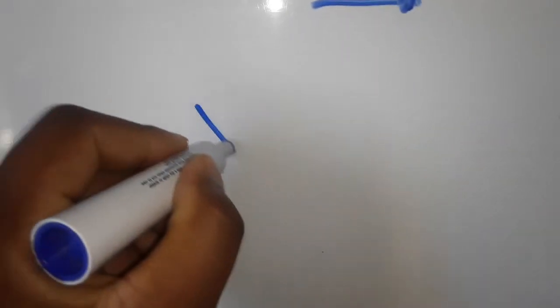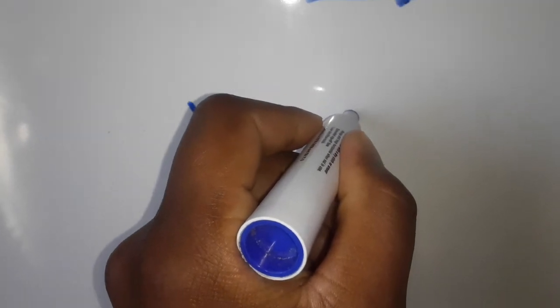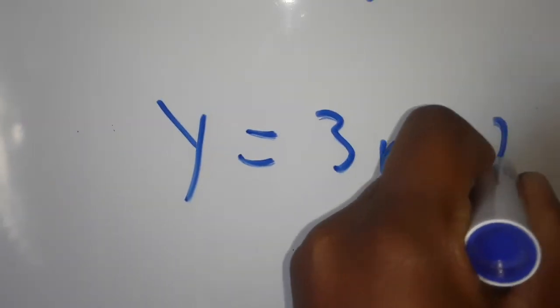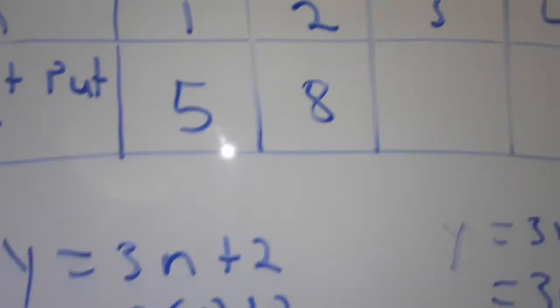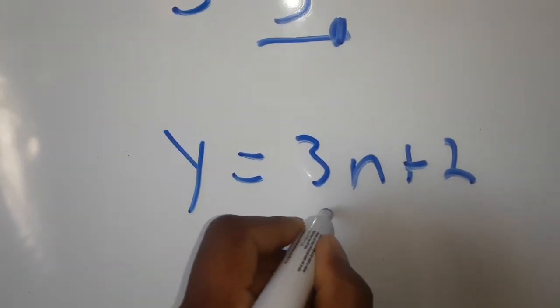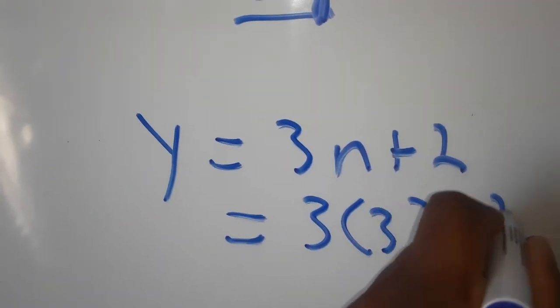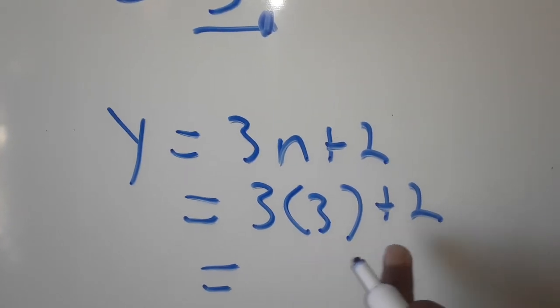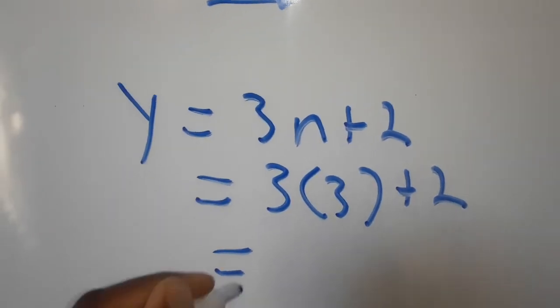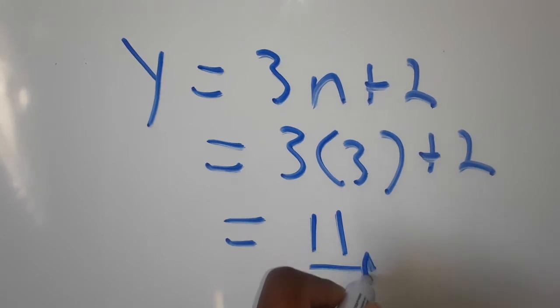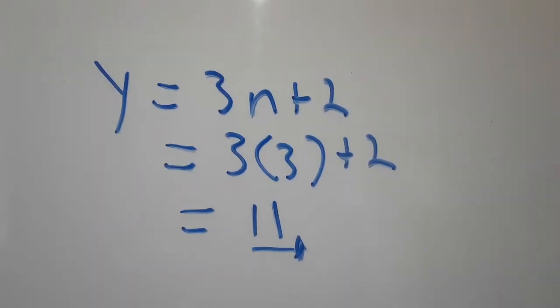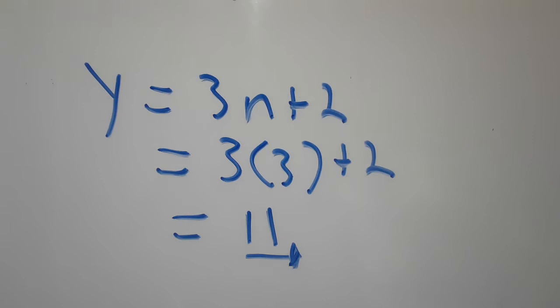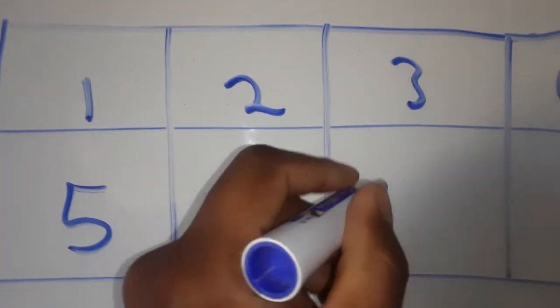Then we have another one: y is equal to 3n plus 2. We want the value of y. The third input is 3. So we're going to have 3 times 3, which is 9, plus 2, which gives us 11. So we have 11 as our output.